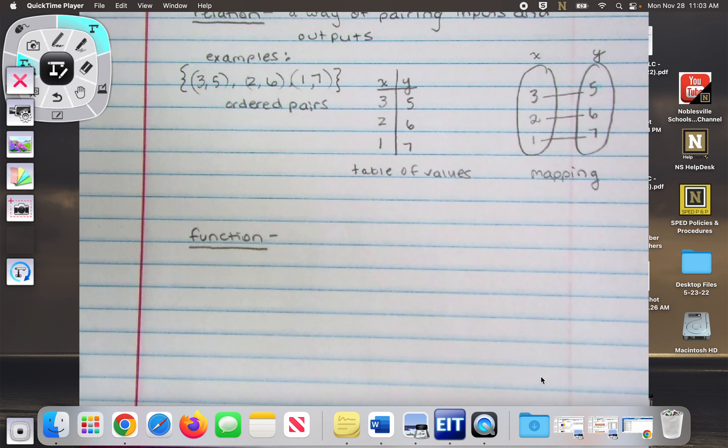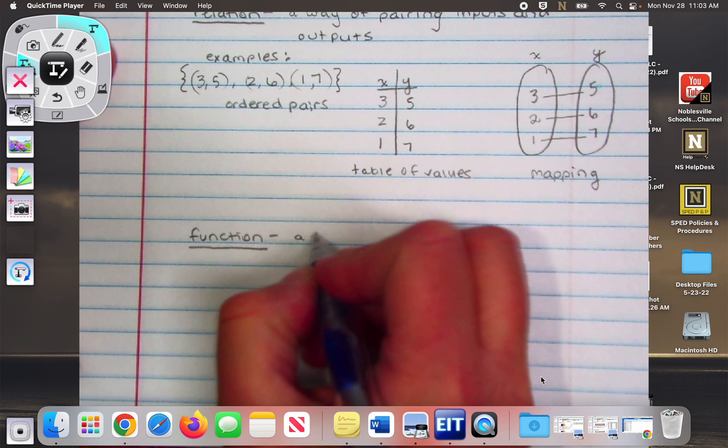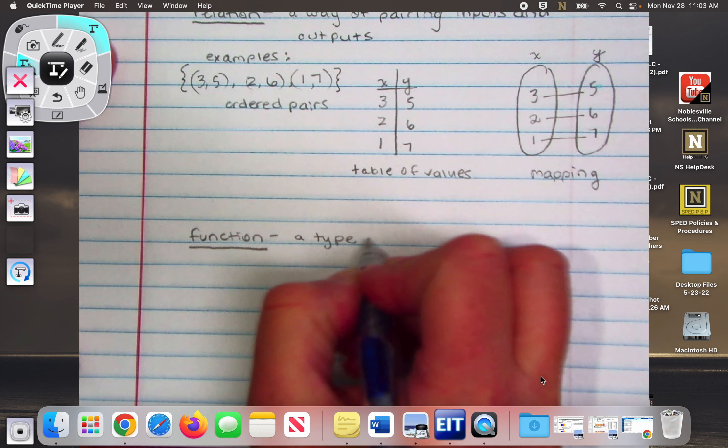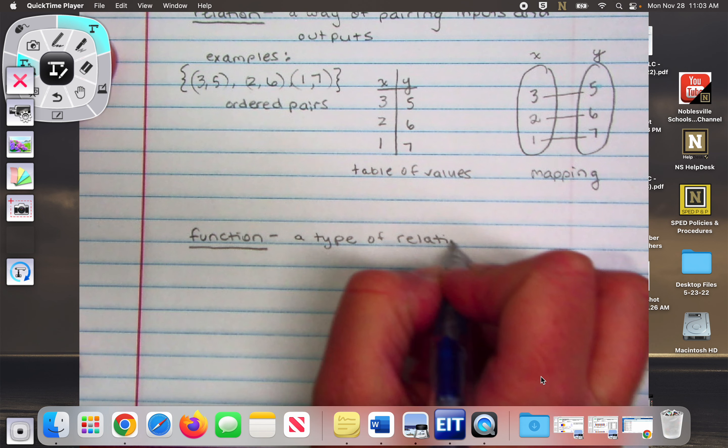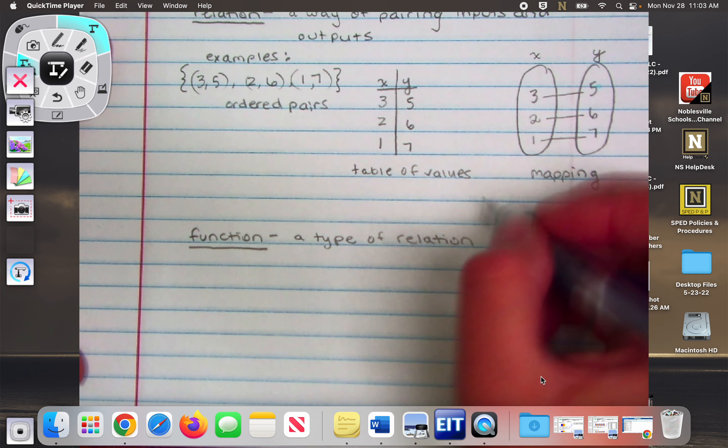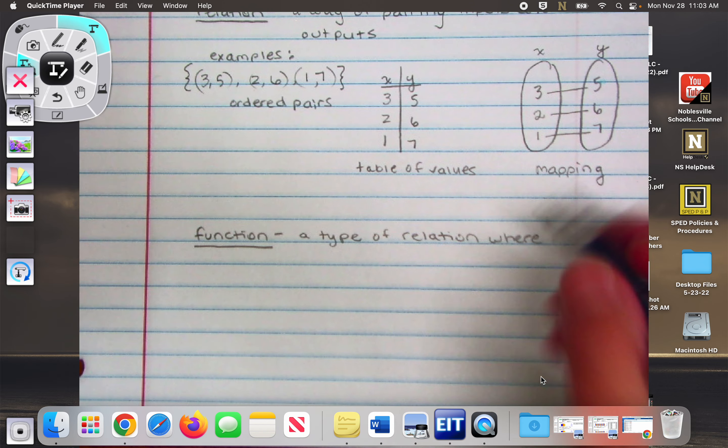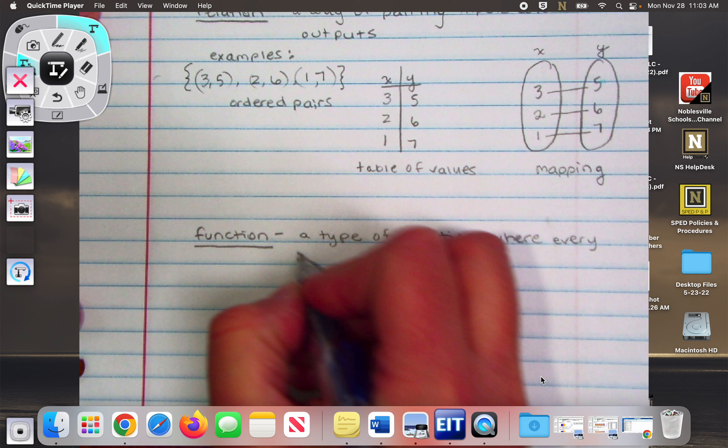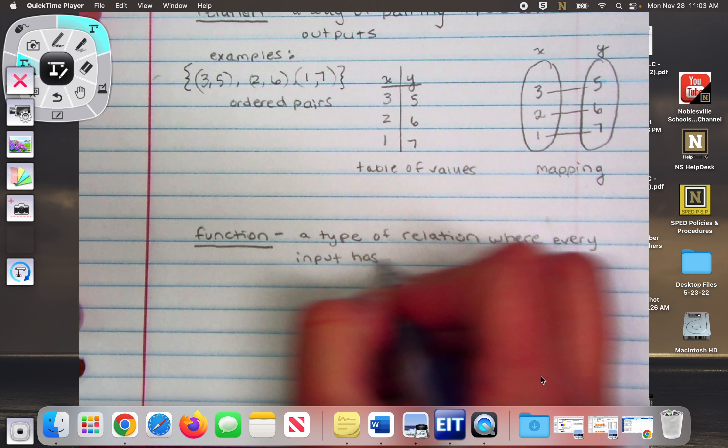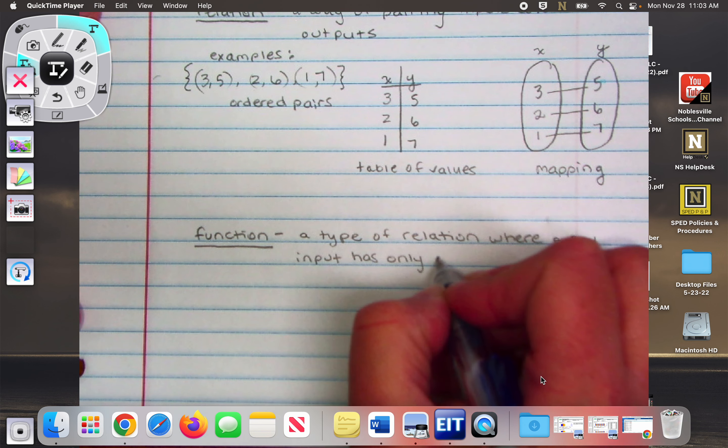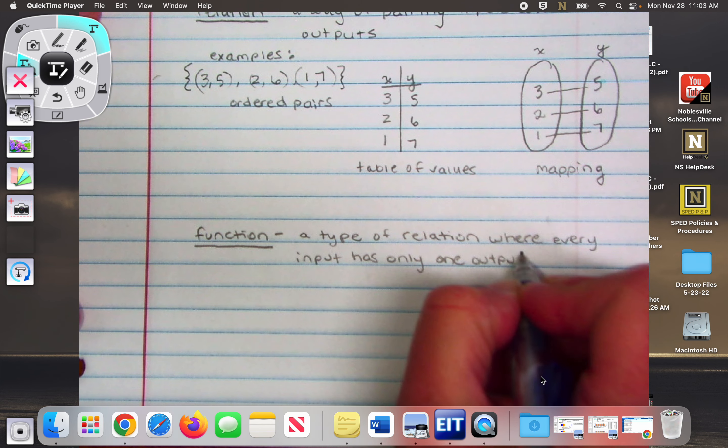So I'm going to tell you right now how to decide if something is a function or it's not a function. There's one very key detail that sets functions apart from not functions. So a function is a type of relation, right? It falls into that category of relation where every input has only one output.